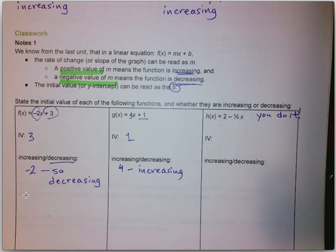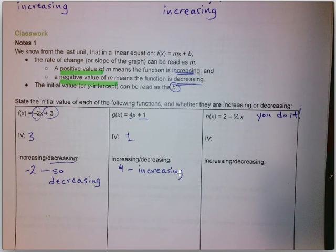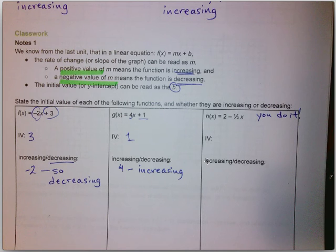For g(x), the initial value is 1 and since 4 is multiplying x — like m in mx + b — and 4 is positive, it's an increasing function. I didn't answer h(x) because you need some practice. Note these are written backwards, so be careful selecting your initial value and determining whether the function is increasing or decreasing.